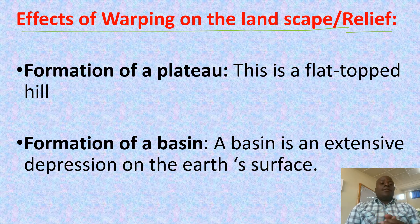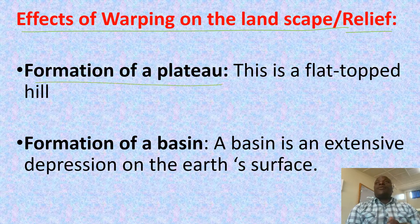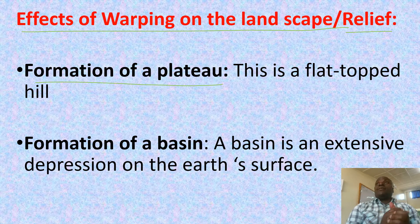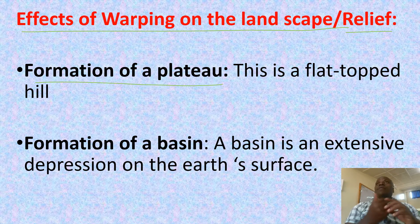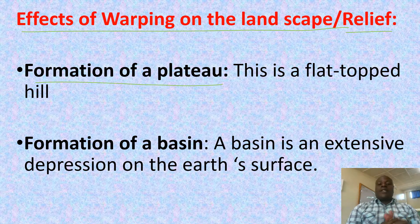Number one, formation of a plateau. A plateau is a flat-topped hill. If there is warping, a flat-topped hill may end up being formed, which we have called a plateau.